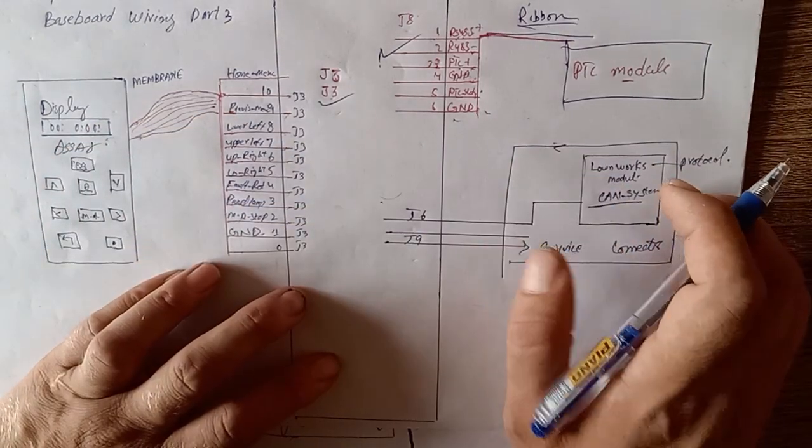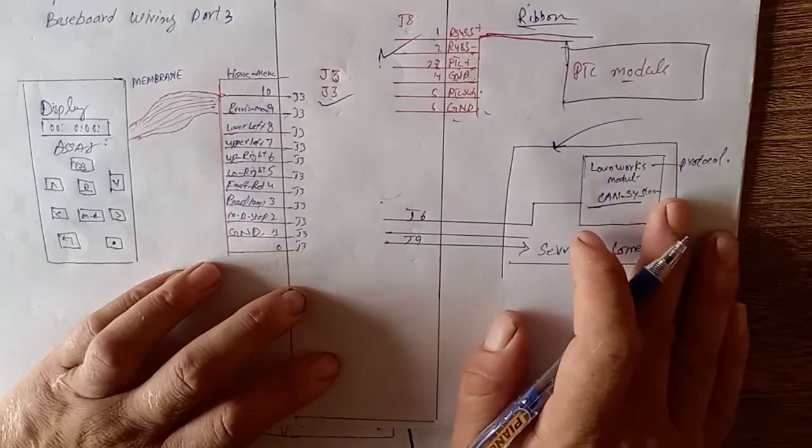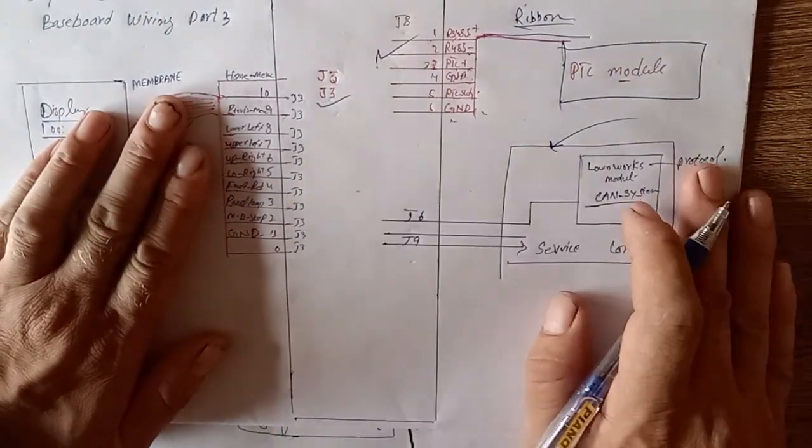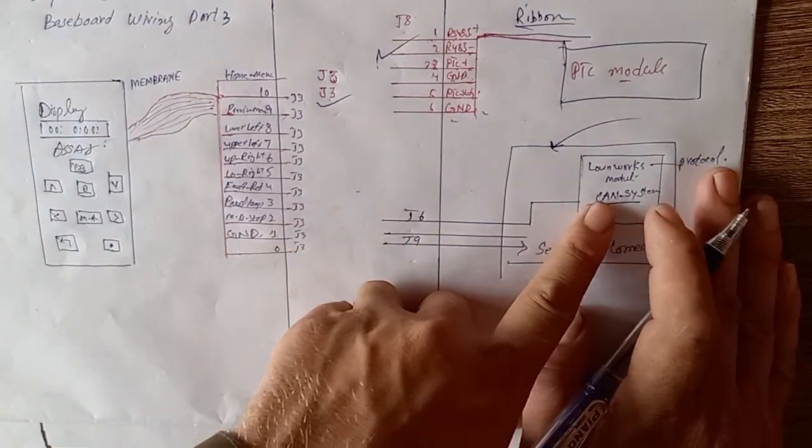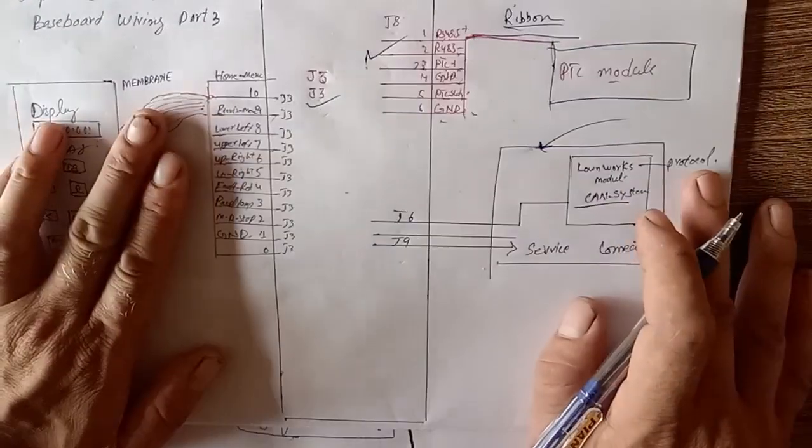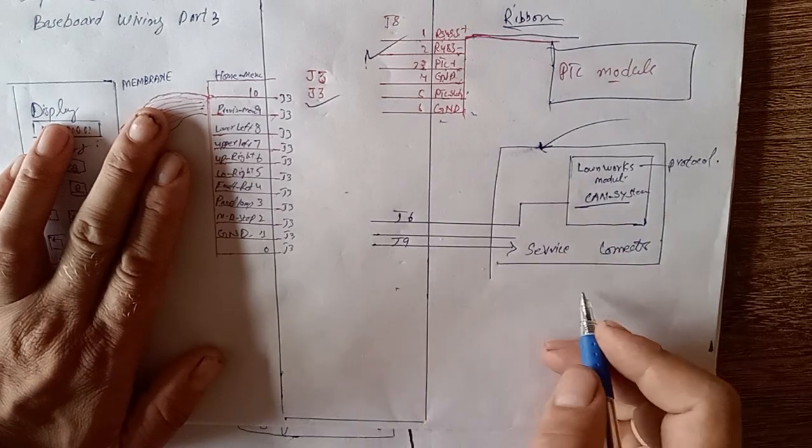This is the complete section of CAN communication. If you have a problem related to CAN communication error, you check this section. This section has another complete class, but we simply call this the Lonworks module in communication system protocol. J9 is for the service connector.